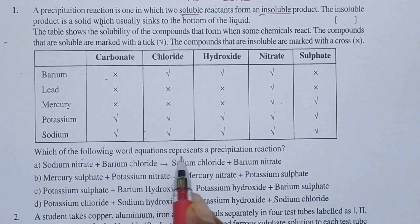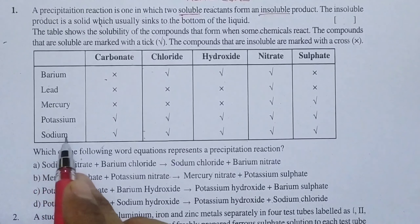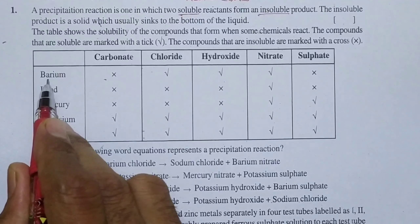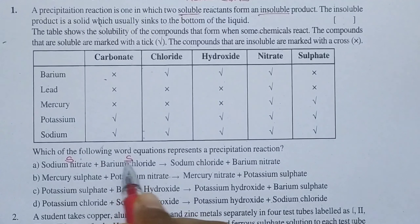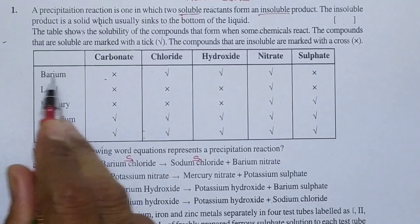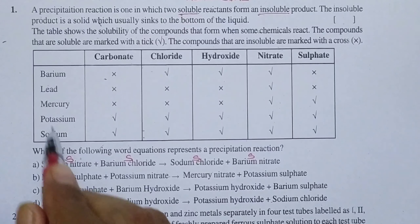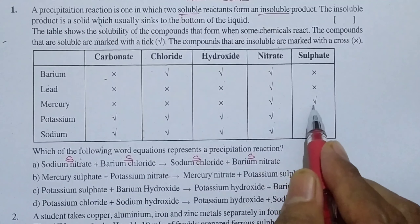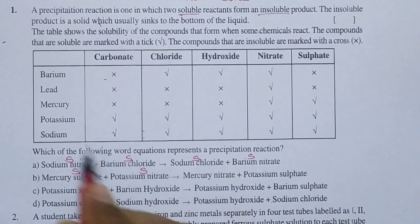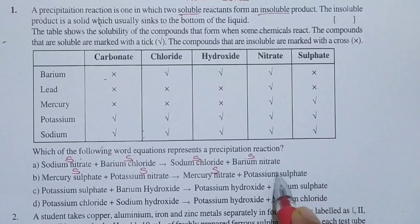Which of the following body equations represent a precipitation reaction? Sodium nitrate — tick mark, so soluble. Barium chloride — tick mark, so soluble. Sodium chloride — tick mark, so soluble. Barium nitrate — tick mark, so soluble. Mercury sulphate — soluble. Potassium nitrate — soluble. Mercury nitrate — soluble. Potassium sulphate — soluble.